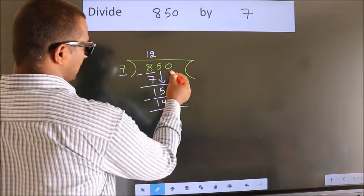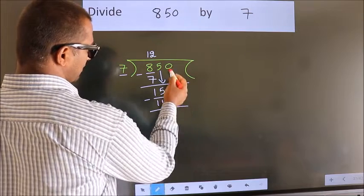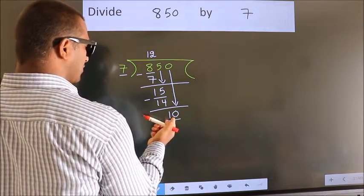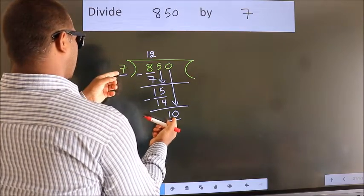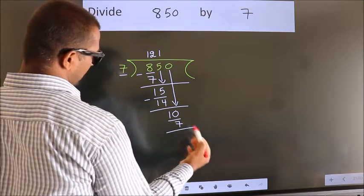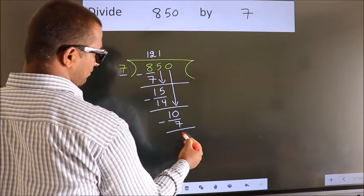After this, bring down the beside number. So 0 down. So 10. A number close to 10 in 7 table is 7 once 7. Now we subtract. We get 3.